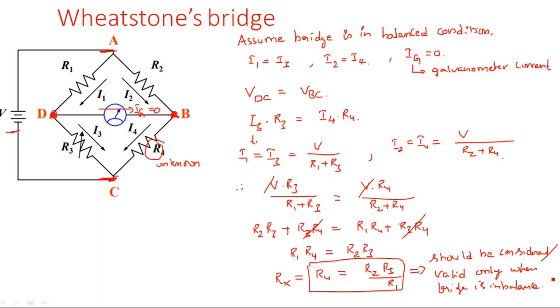This concludes the explanation of Wheatstone's bridge. In the next video, I will explain how to measure the current flowing through the galvanometer when the bridge is in an unbalanced condition.